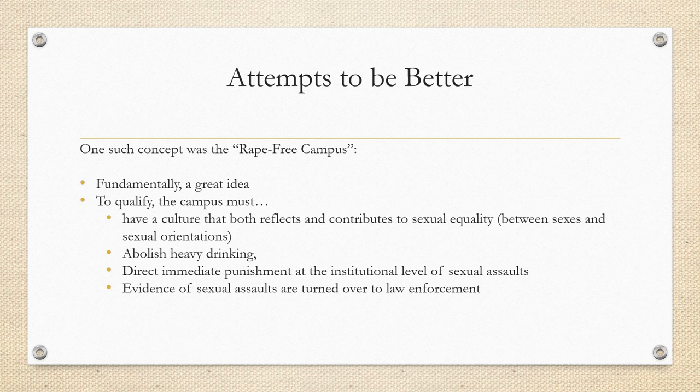Additionally, direct immediate punishment at the institutional level for sexual assaults — that looks pretty good, actually. An element in the previous era was that when rapes would occur, the rapist would get very minimal punishment, something like academic probation for raping a woman and permanently psychologically scarring them. What we're arguing here is that these people need to be punished at the institutional level. And then also: evidence of sexual assaults should be turned over to law enforcement. That again is a very real thing that would actually be very helpful.